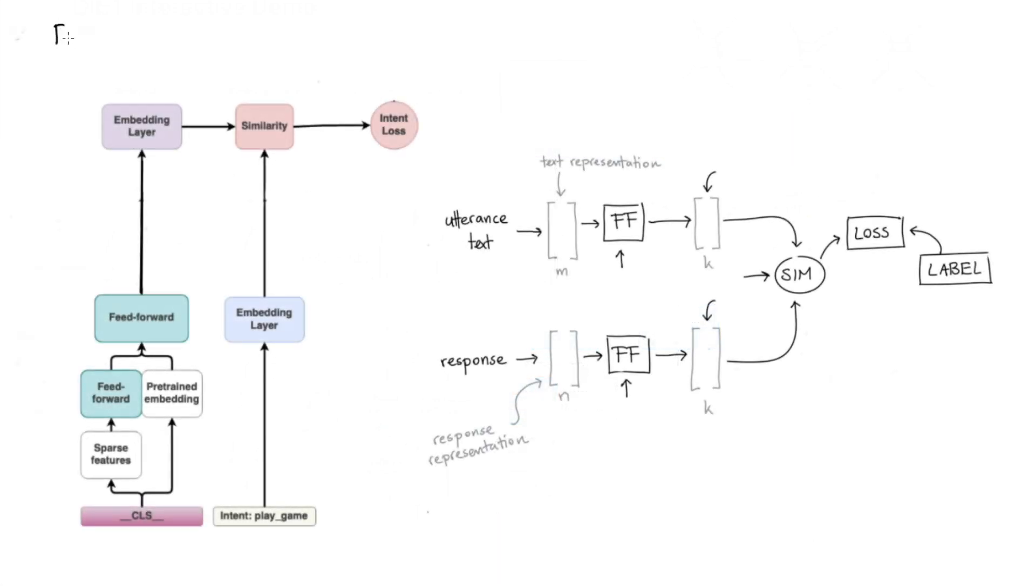So just to reiterate, on the left hand side here, I have DIET with certain settings. On the right hand side, we have our StarSpace method for response selection. And what I'm going to do first is I'm just going to have a look at what we've got over here. And that token is supposed to summarize the entire utterance.